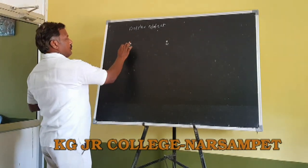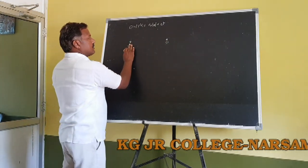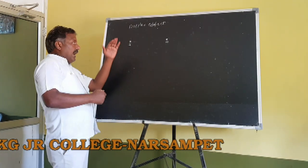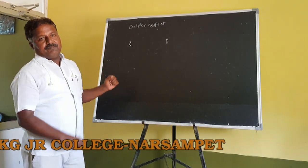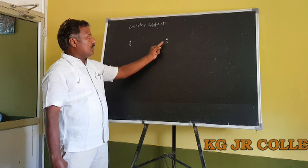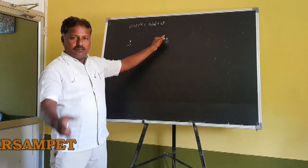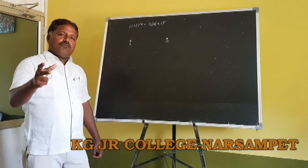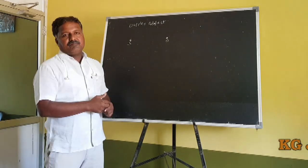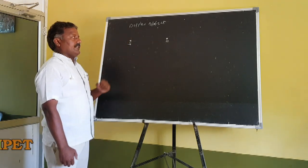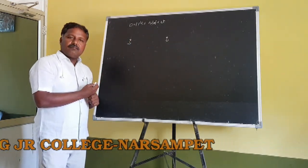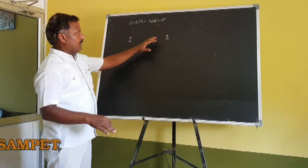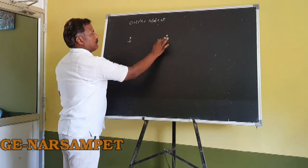S is the source, O is the observer. Suppose the source approaches an observer — frequency increases. Away from an observer — frequency decreases. The sound frequency heard by the observer increases when the source approaches and decreases when it moves away. So the apparent change in frequency: an apparent frequency of sound heard by an observer due to relative motion between source and observer is called the Doppler effect.